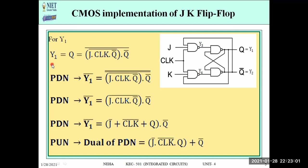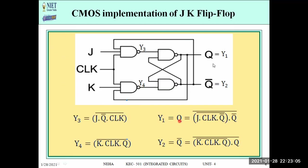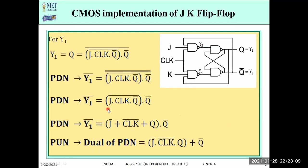For the pull-down network of y1, we take the complement of y1, which gives: J · clock · Q̄ · Q̄. Further simplifying: J · clock · Q̄ + Q · Q̄. This is our PDN. For the PUN, we take the dual of the PDN — literals stay the same, only AND and OR operations swap. So PUN = (J · clock · Q̄ · Q) + Q̄.